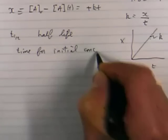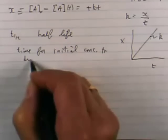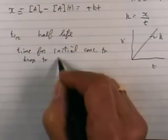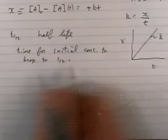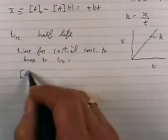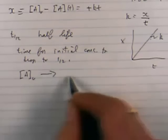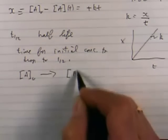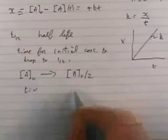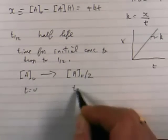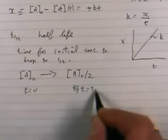Time for the initial concentration to drop to one-half. So if I start out with A naught at time T equals zero, A naught divided by two, this is T equals zero, this is T equals T one-half.